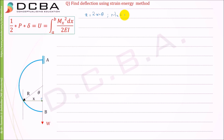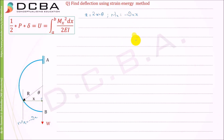Mx is equal to minus W times x, because this is creating a hogging moment. The load W is going to take this beam downwards in a clockwise moment, giving a frowning shape, and a frowning or hogging phase is negative. Therefore it is minus Wx. We can write x in terms of r·sin(θ), so Mx = -W·r·sin(θ), and Mx² = W²·r²·sin²(θ).